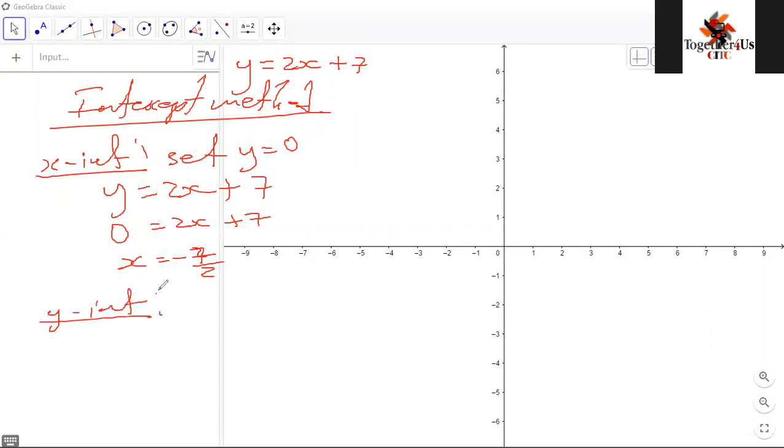Then I move on to find the y-intercept. This is the easiest way to plot any function. Set x equals to 0 because I'm looking for the y-intercept. Again, y is 2x plus 7, so y is 2 times 0 plus 7. And this is just 0, so I'm left with a 7.